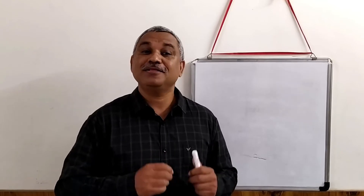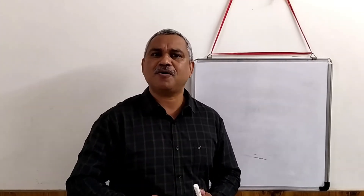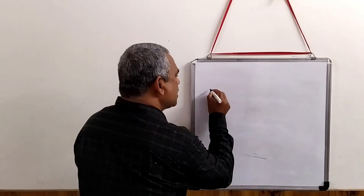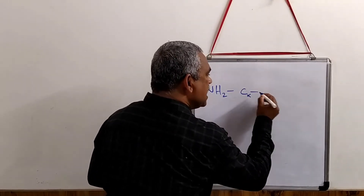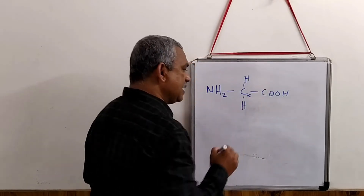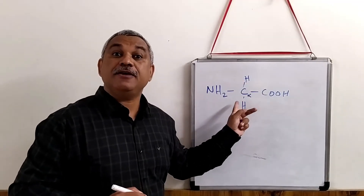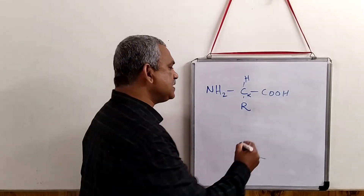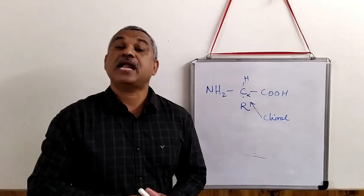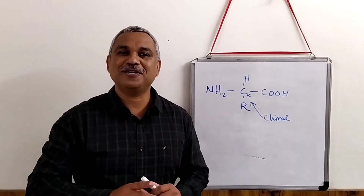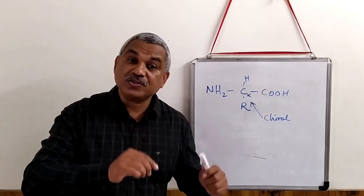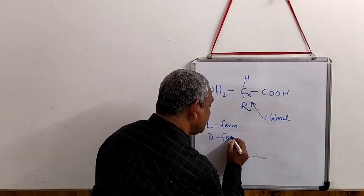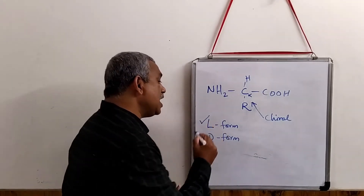One of the interesting aspects about amino acids is that they are chiral compounds. If we write the structure of an amino acid - with NH2, the C-alpha, the carboxyl end, a hydrogen, and an R group - if this carbon is connected to 4 different groups, we say that it is a chiral carbon. 19 amino acids are chiral; only one of them is achiral, and that is glycine. Because of chirality, amino acids exist in L-form as well as in D-form. All naturally existing proteins have the L-form of amino acids.